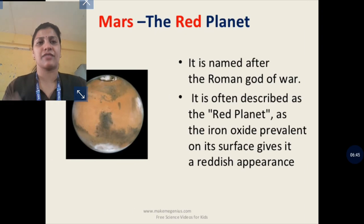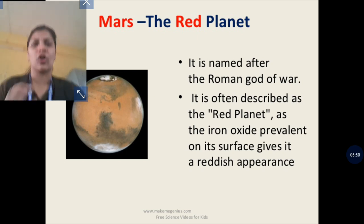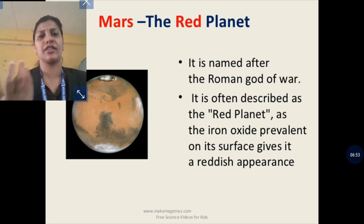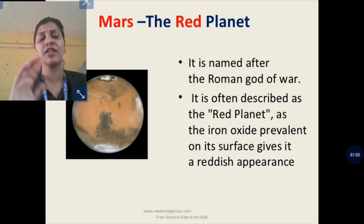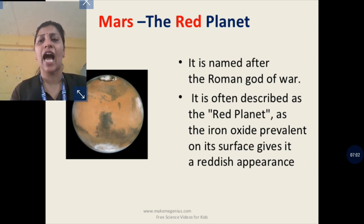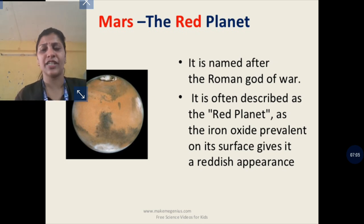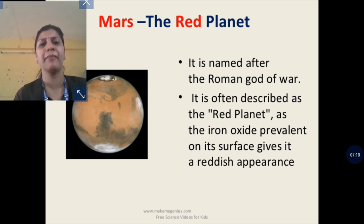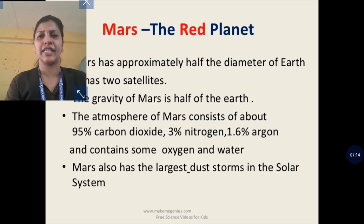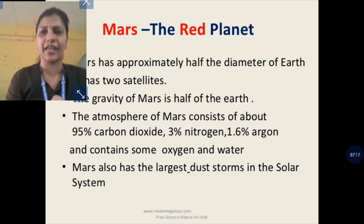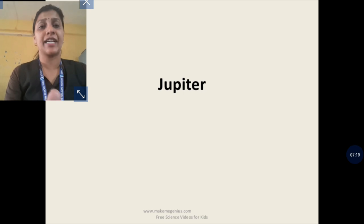Mars is also called the red planet. It is called the red planet because its soil contains a large amount of iron oxide, which makes it appear reddish. Mars is the second smallest planet and is the fourth planet from the sun.